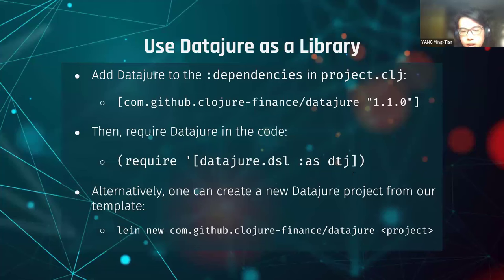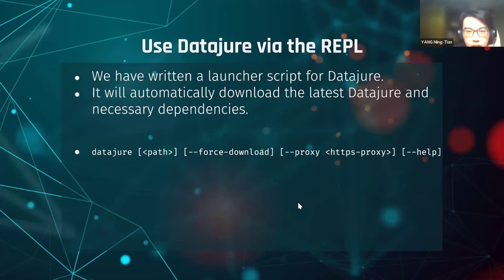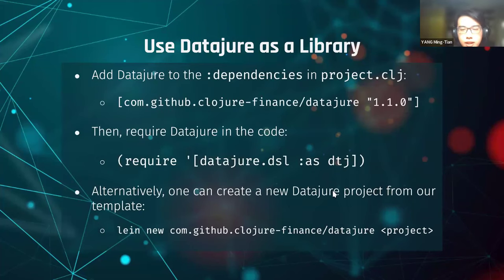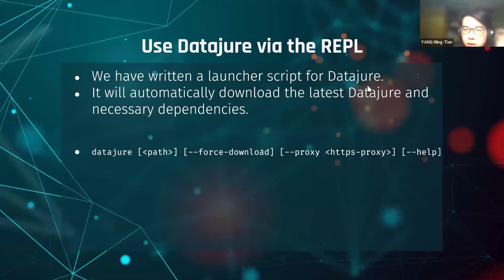Alternatively, you can create an empty DataJure project from our Leiningen template using the lein new command, which will generate an empty project with the necessary dependencies and includes an example of DataJure. But since our target users are novice coders, they may not know how to use Leiningen or how to modify configuration files. So we also provide an even easier version: a launcher script for DataJure — two scripts for different operating systems.